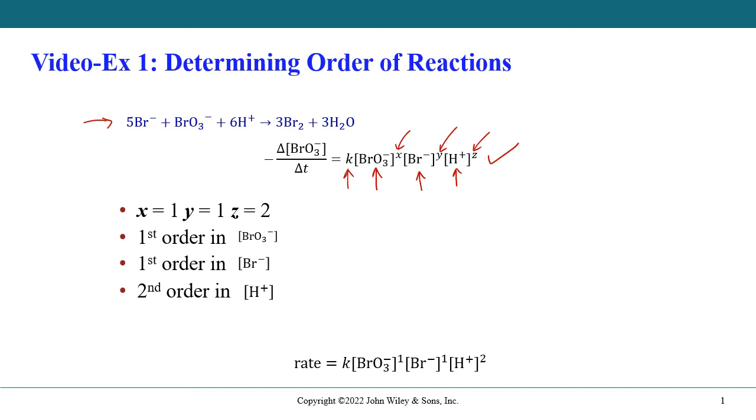And if we were to determine the overall order, remember we add, so the overall order is the addition of all the exponents. So we will just add x plus y plus z. That's what the overall order will give us. And we'll end up with an overall order of 4.